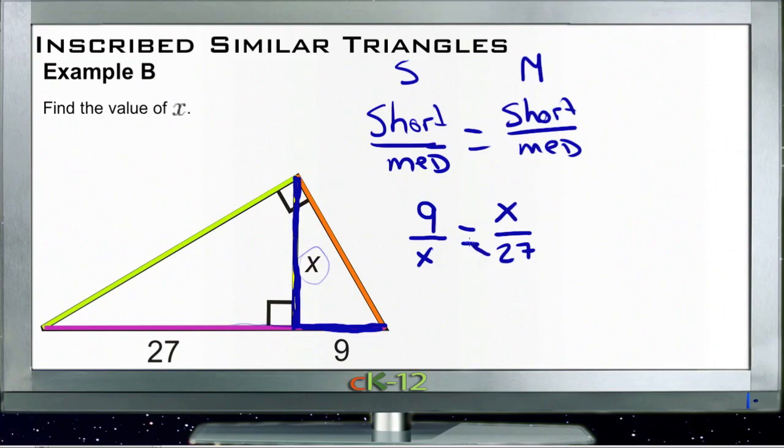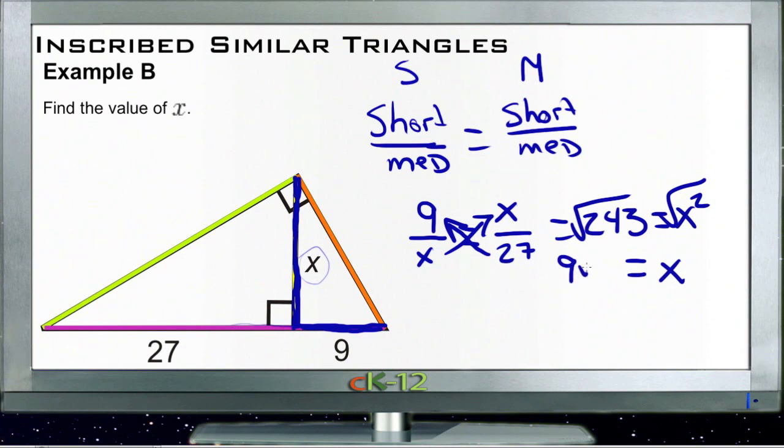So now we've set up a proportion and we can just cross multiply. We can say that 27 times 9, which is 243, is equal to x times x, which is x squared. So then we just need to take the square root of both of those, and we get x equals the square root of 243, which would be 9 roots of 3.